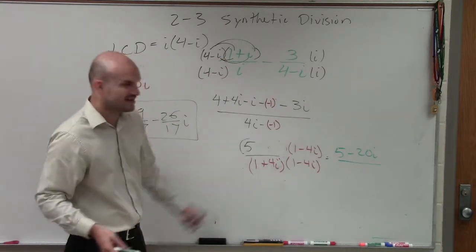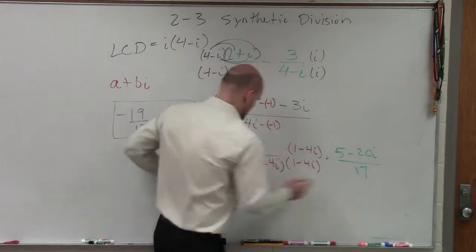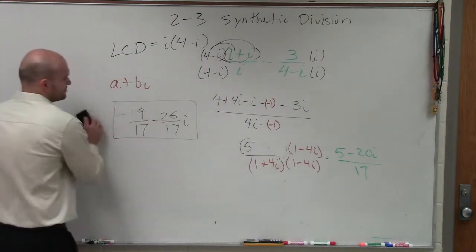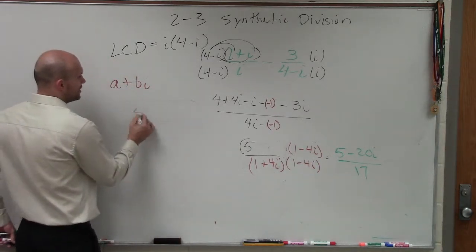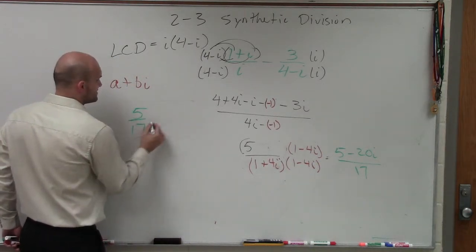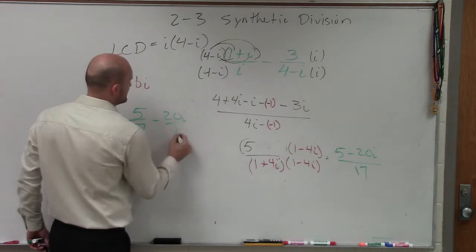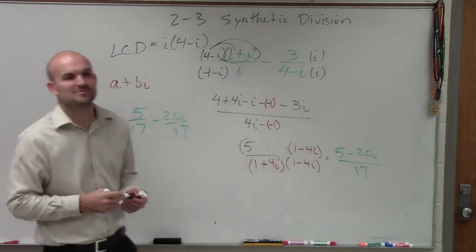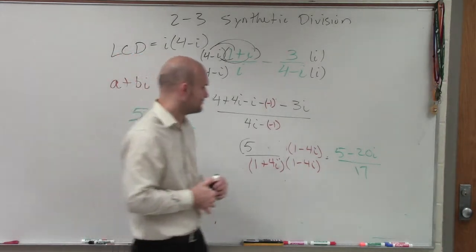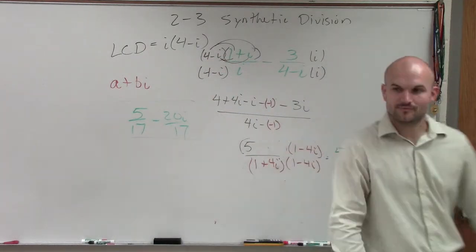And then on our bottom, we said that was 17. So therefore, my answer has now changed to the correct version of 5 over 17 minus 20i over 17. You can make sure you let me know if I make a mistake earlier. But thank you. That's awesome.